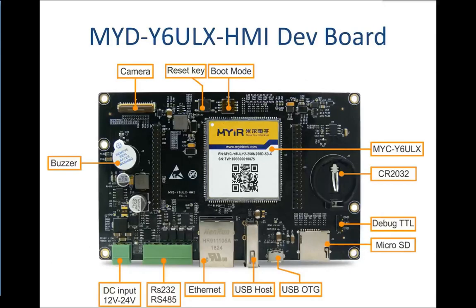In addition to the core components provided by the SoM, the dev board has extended multiple peripheral interfaces like RS-232, RS-485, USB host, USB OTG, Ethernet, and TF card to its baseboard to allow communications with other devices. It also features a camera interface and supports 16-bit LCD and 4-wire resistive or capacitive touch screen driven directly from the board circuit. The board provides two headers for I/O extension. Users can customize their own I/O board to connect with this dev board to further explore more functions.